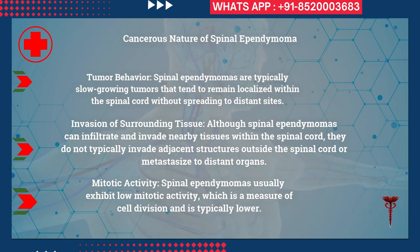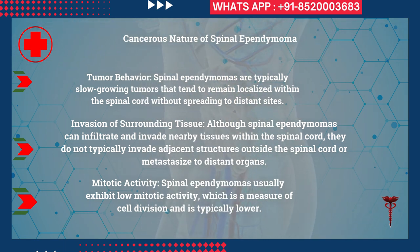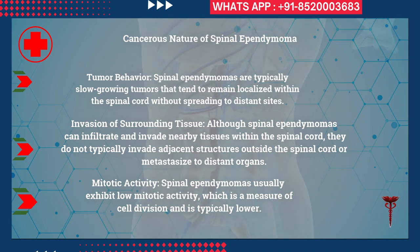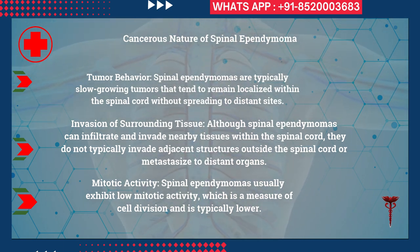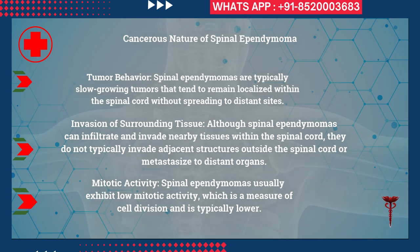Regarding tumor behavior, spinal ependymomas are typically slow-growing tumors. They tend to remain localized within the spinal cord without spreading to distant sites. While they can infiltrate and invade nearby tissues within the spinal cord, they do not typically invade structures outside the spinal cord and do not spread to distant organs.